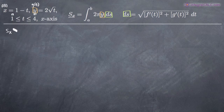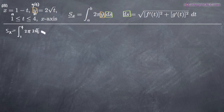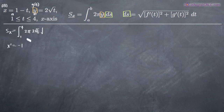The surface area found by revolving the parametric curve around the x-axis is given by the integral from one to four of two pi — and now we substitute for y, so we have two times the square root of t — times ds. For ds, we take the square root of f prime of t squared plus g prime of t squared dt. The derivative of x, f prime of t, is the derivative of one minus t, which is negative one, since the derivative of one is zero and the derivative of negative t is negative one.